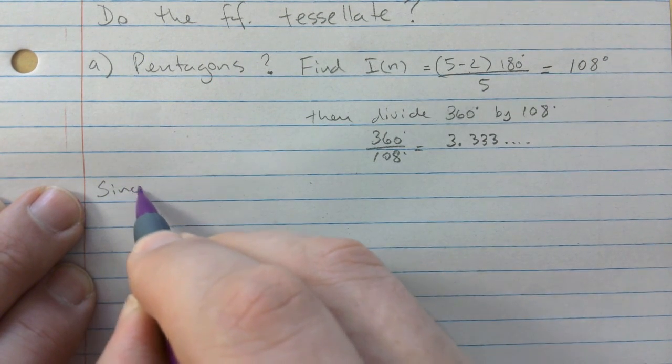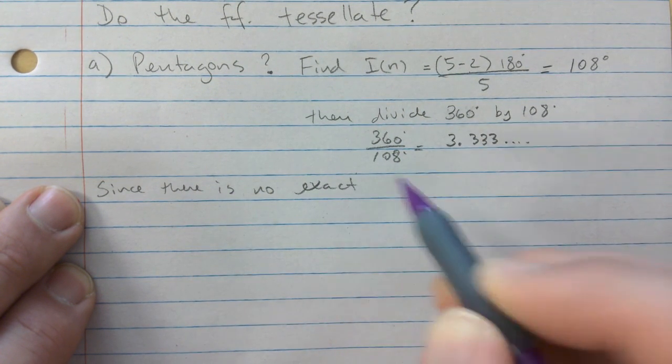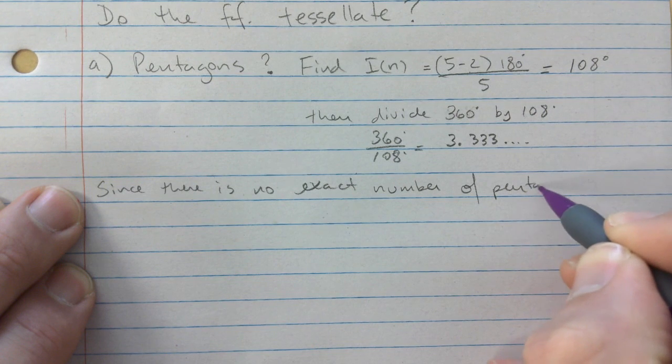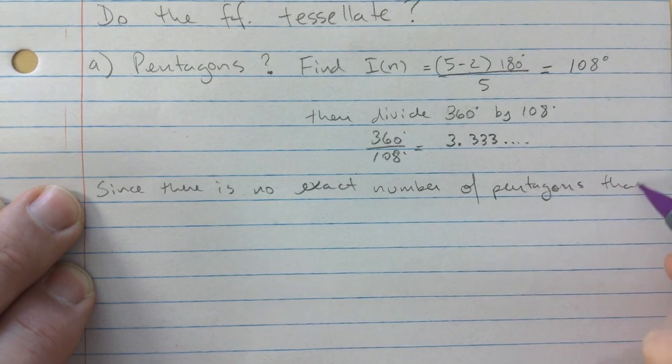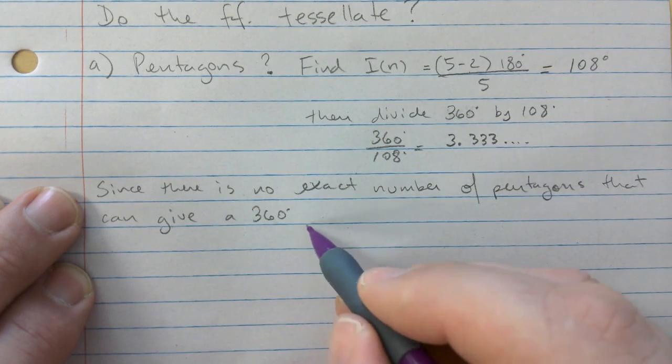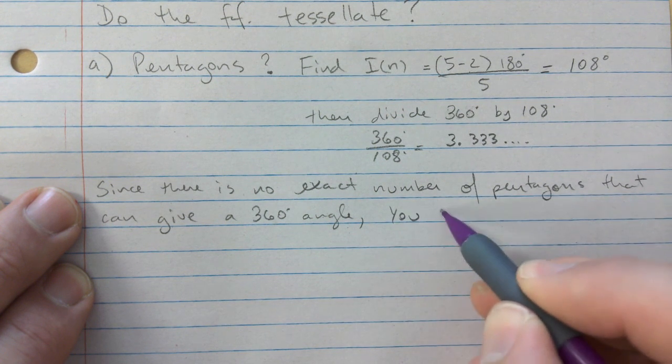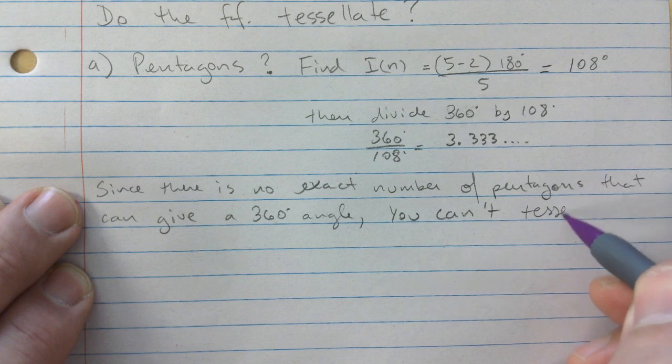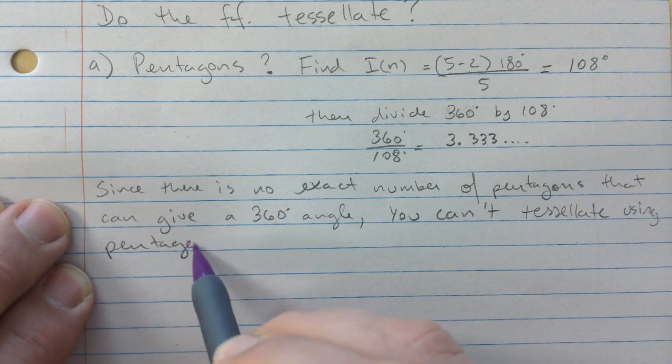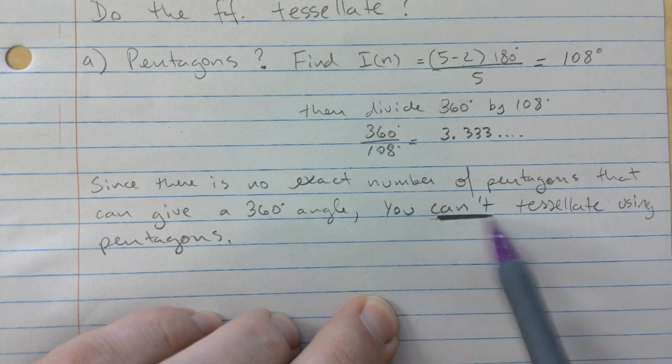And then we conclude, since there is no exact number of pentagons that can give a 360 degree angle, you can't tessellate using pentagons. Can't do it.